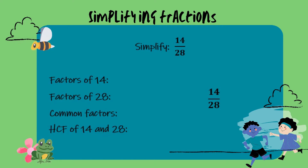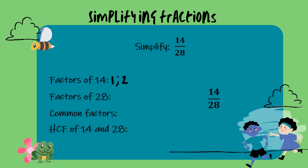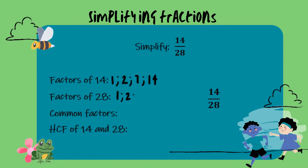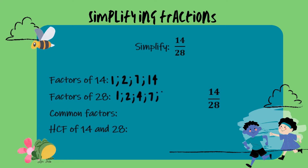We start by listing the factors of 14. The factors of 14 are 1, 2, 7 and 14. The factors of 28 are 1, 2, 4, 7, 14 and 28.